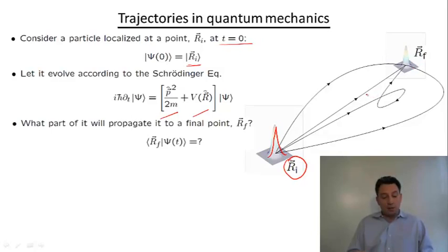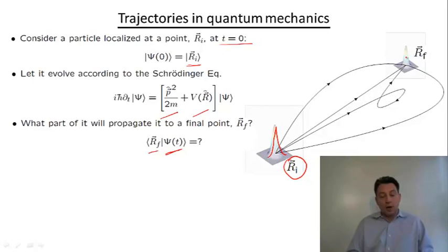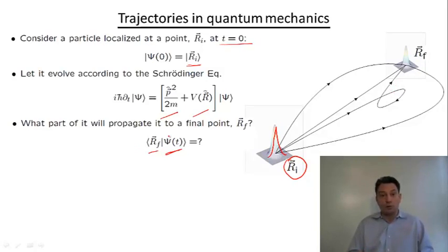In other words, what part of this spread-out wave packet will be located near this point? This mathematically implies calculating the overlap between the final wave function psi of t, governed by the Schrodinger equation, and R sub f, which describes a wave packet near some other final point. A part of this wave packet will indeed be located near this point, and this overlap is the propagator that we're going to focus on.